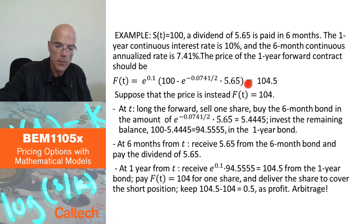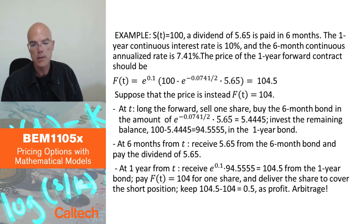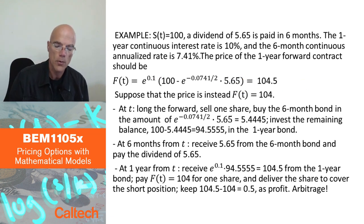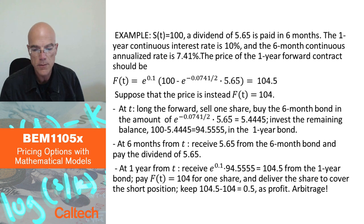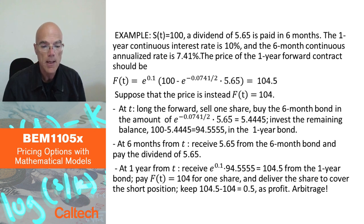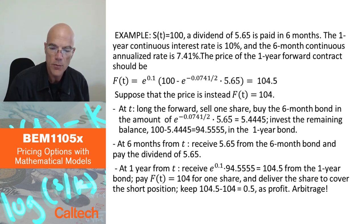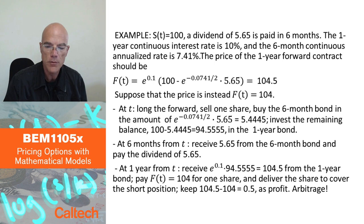Using that formula from the previous slide, I get $104.50 as the no-arbitrage price for this forward contract in this market environment.